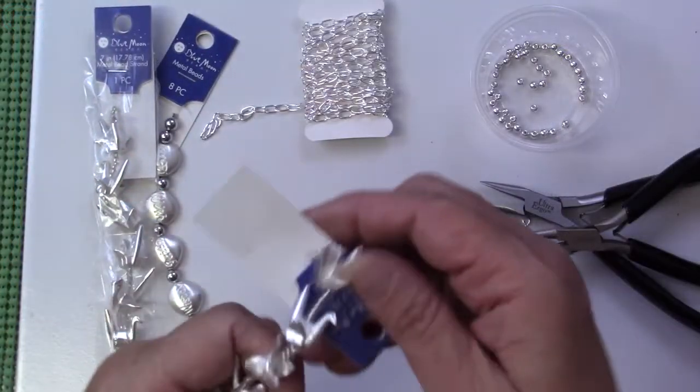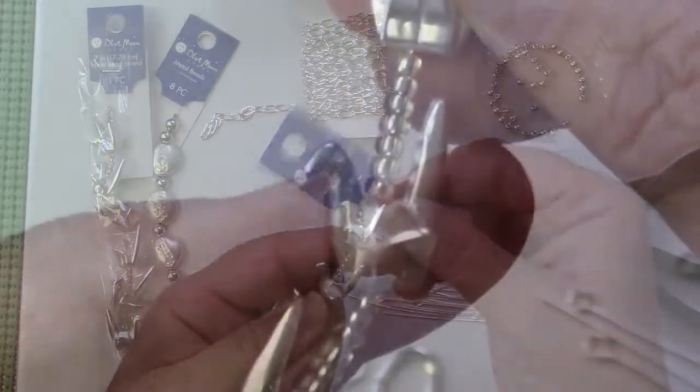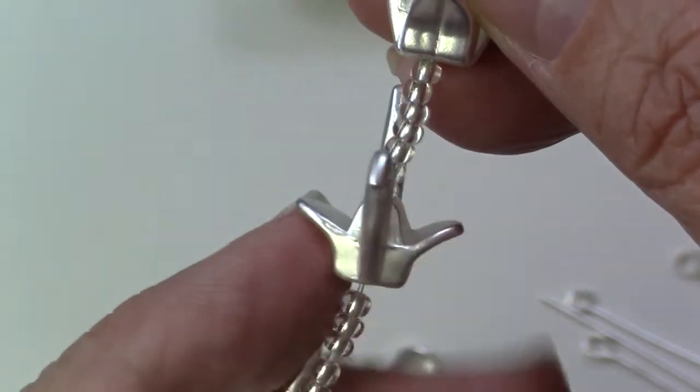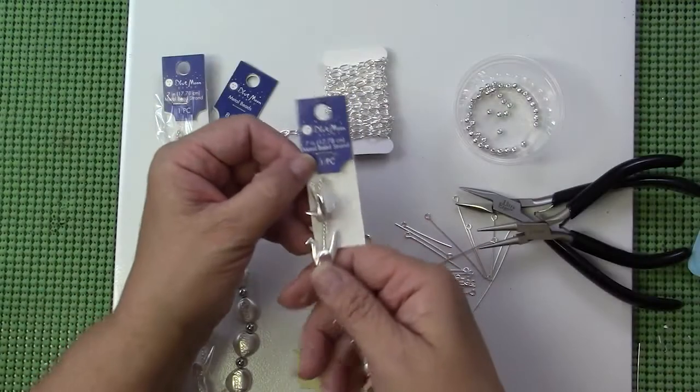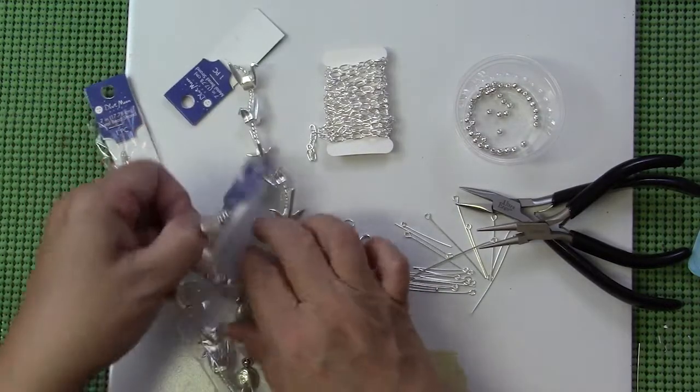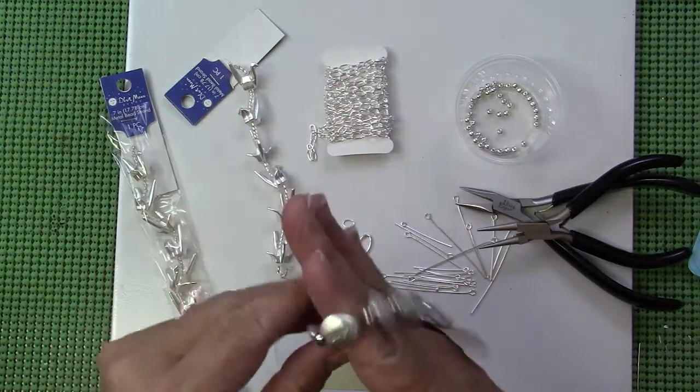The first pieces I have here are some Blue Moon origami style cranes in a silver tone metal. They came in the string. I think I got these at Joann's and then I also got these little charms that have engraved words on them. I'm actually going to use the little drop charm that says wish.